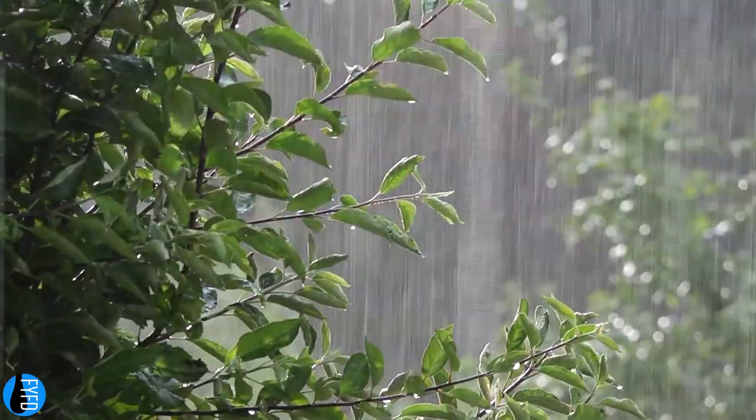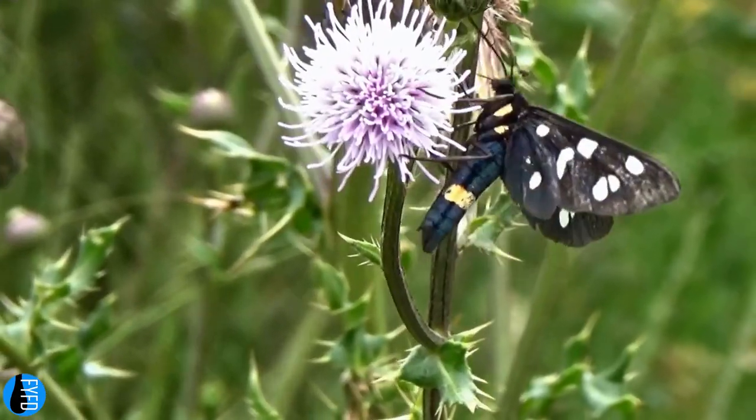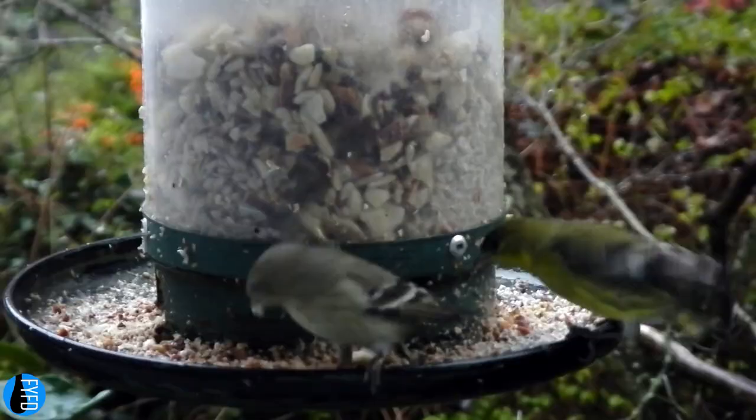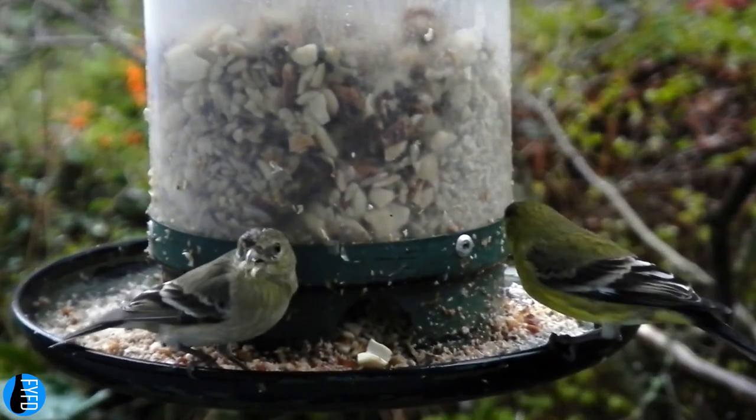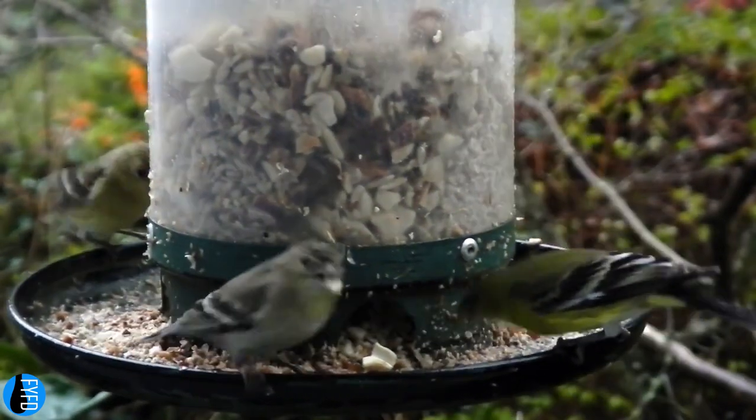Rainfall poses a major issue for many species. When wet, insects become too heavy to fly and small warm-blooded animals like birds can become too cold for their metabolism to compensate.